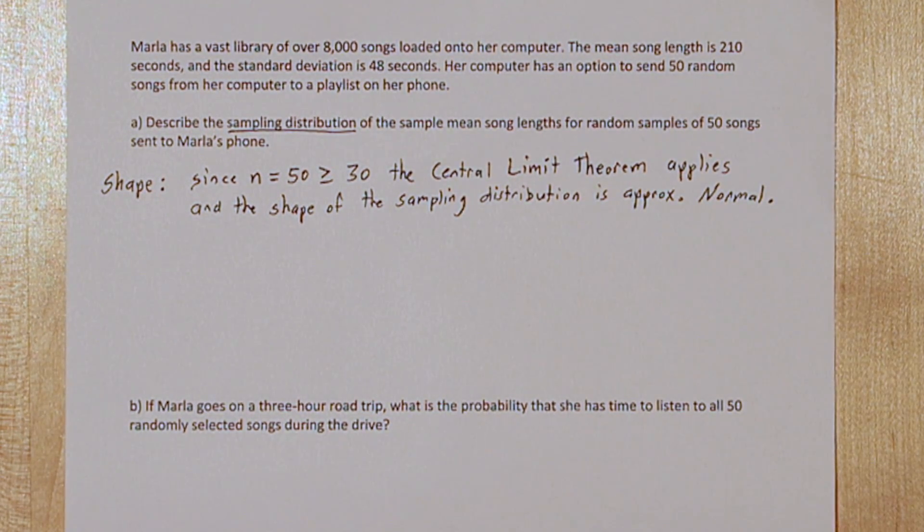The center of our sampling distribution is going to be at the true mean, 210 seconds.